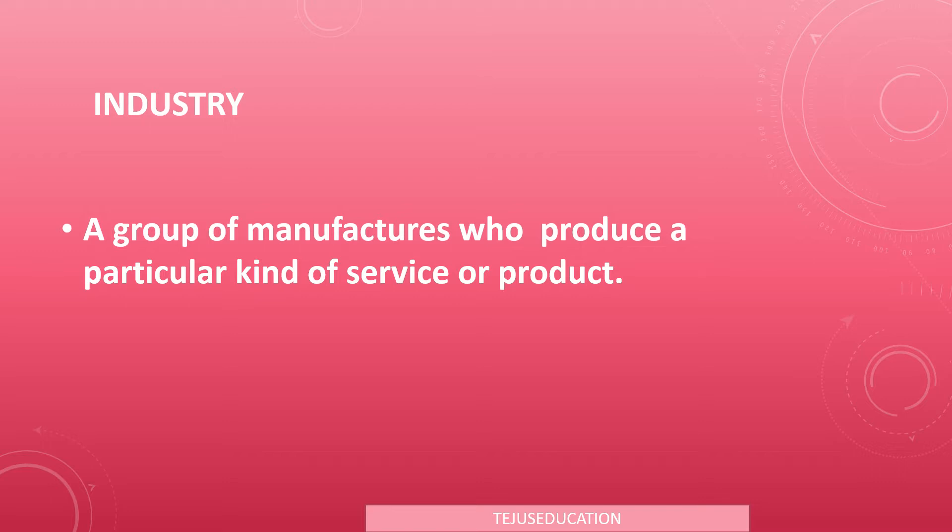What is an industry? An industry is a group of manufacturers who produce a particular kind of service or product. For example, shoes are produced in the shoe industry, and the banking sector provides us with banking services.